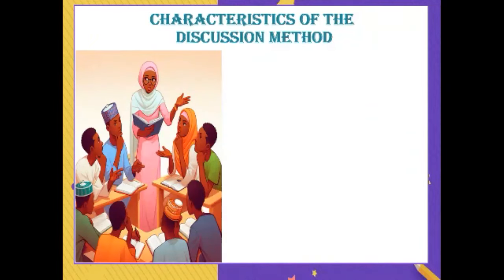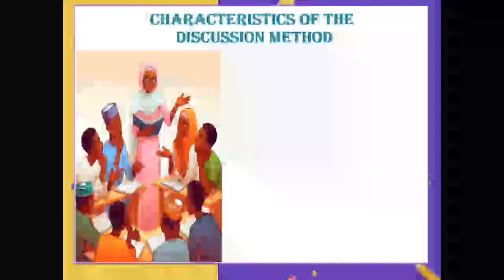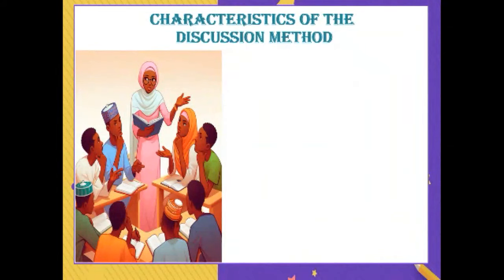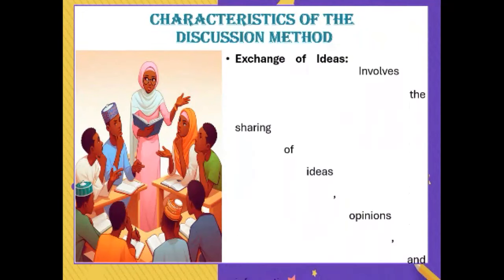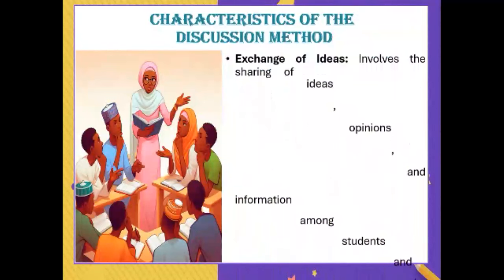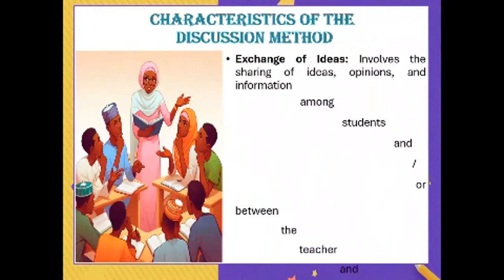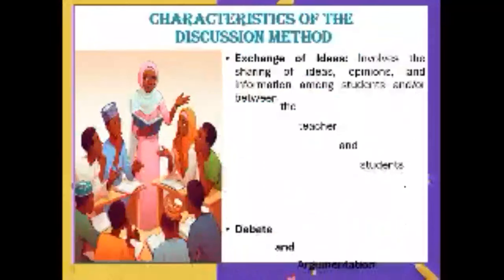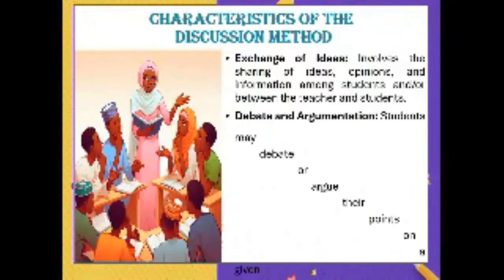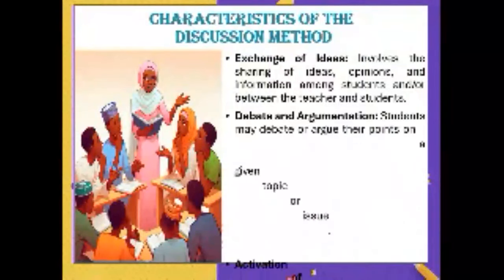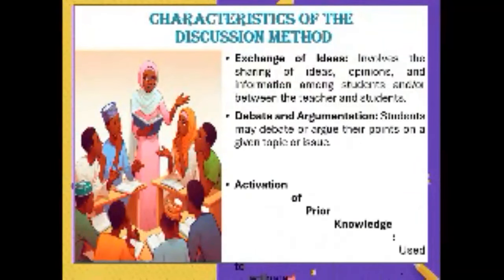What are the characteristics? Take a look at the picture — teacher talking, student talking, active engagement. One of the important characteristics of the discussion method is the exchange of ideas, sharing of opinions, and sharing of information. It also has elements of debate and argumentation — for and against. The teacher provides a topic and students engage with it; some topics may not necessarily have a right or wrong answer.